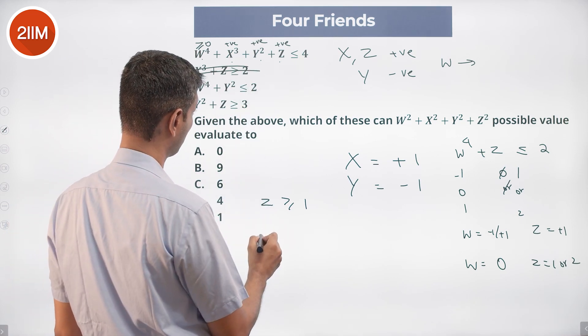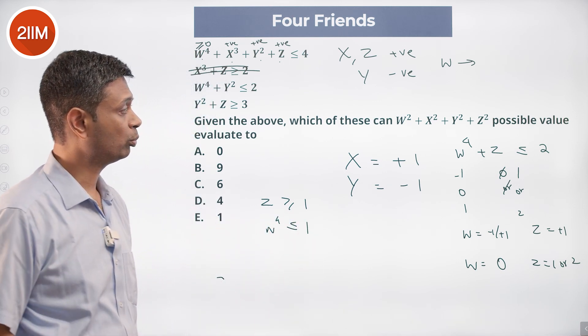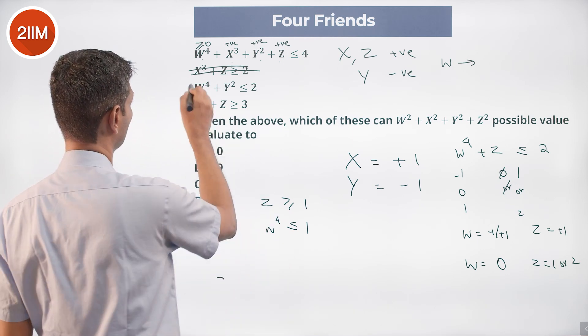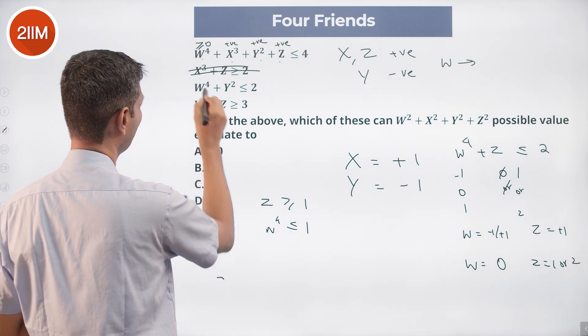W⁴ + Y² ≤ 2, or W⁴ ≤ 1. W⁴ is 0 or 1. This is also useless for us. We have already made those inferences. There is nothing special here.